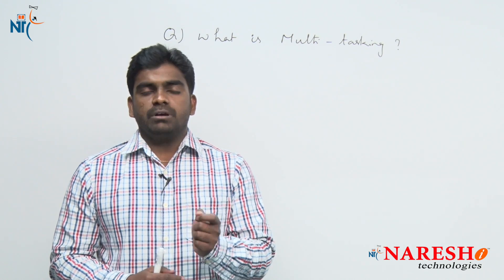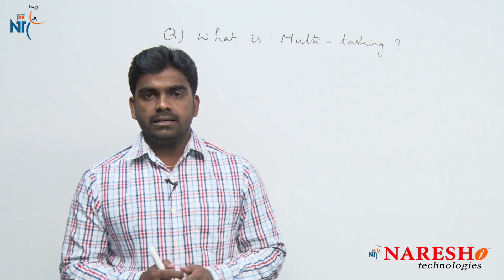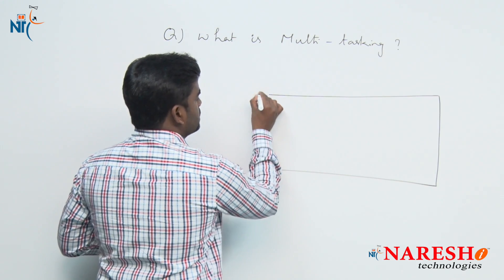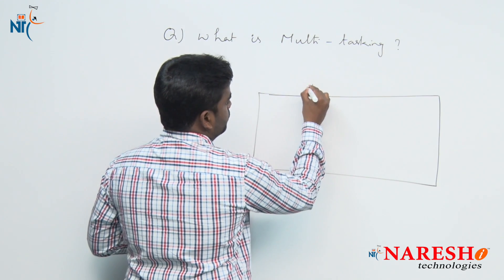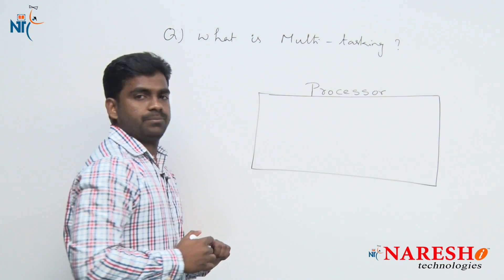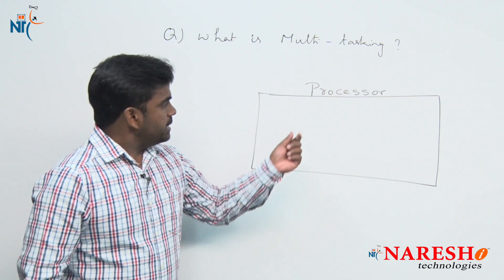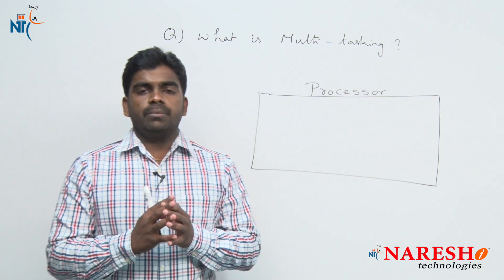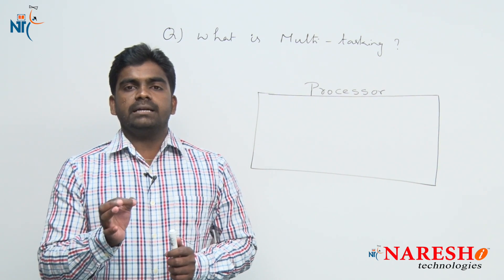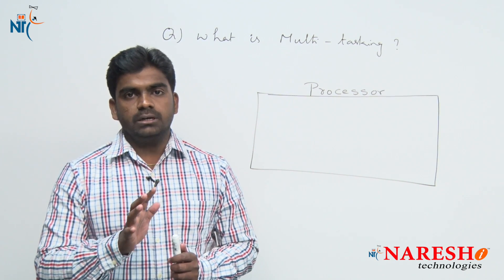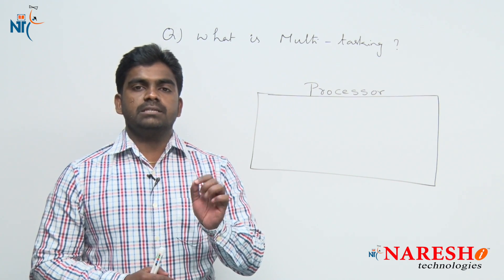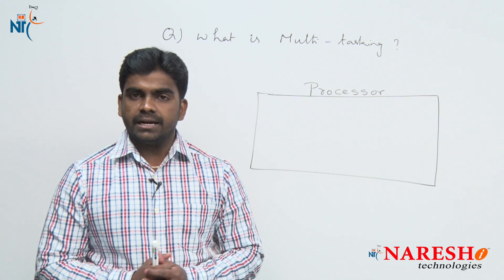But how does a computer perform multitasking? In a computer, every task is executed or performed by the processor. Whenever you are performing multitasking, one very important thing to note: there is no multitasking processor in this world. It is impossible — one processor can execute only one instruction at a time.